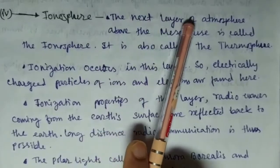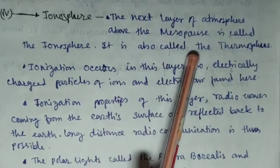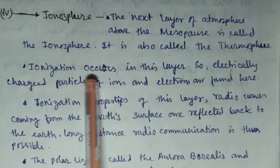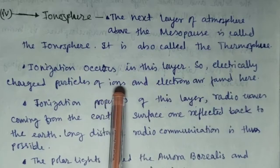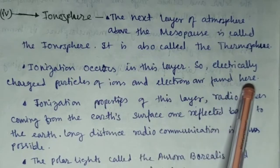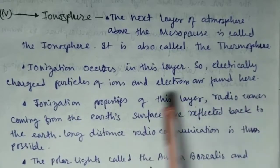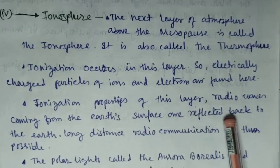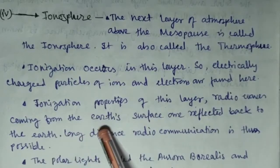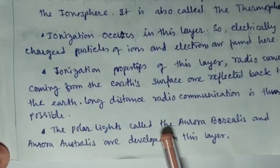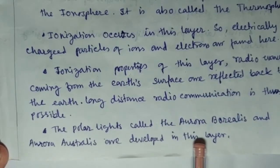The next layer of atmosphere above the mesopause is called the ionosphere. It is also called the thermosphere. Ionization occurs in this layer, so electrically charged particles of ions and electrons are found here. Due to ionization properties of this layer, radio waves coming from the earth's surface are reflected back to the earth. Long distance radio communication is thus possible in this layer. Polar lights called the aurora borealis and aurora australis are developed in this layer.